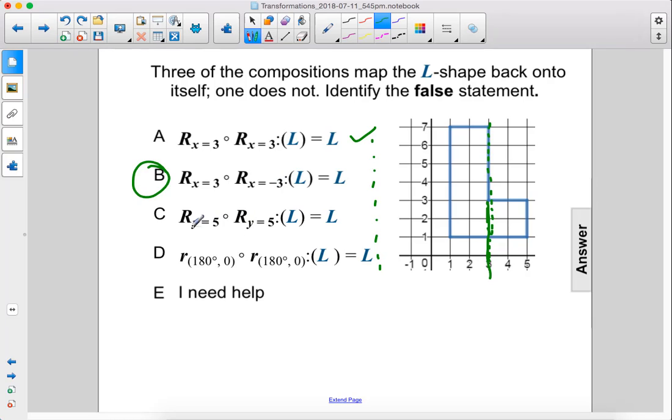For C, if you reflected this over the line y equals 5, and then reflected it right back over that same line, see these are the same, you would get the original position again.